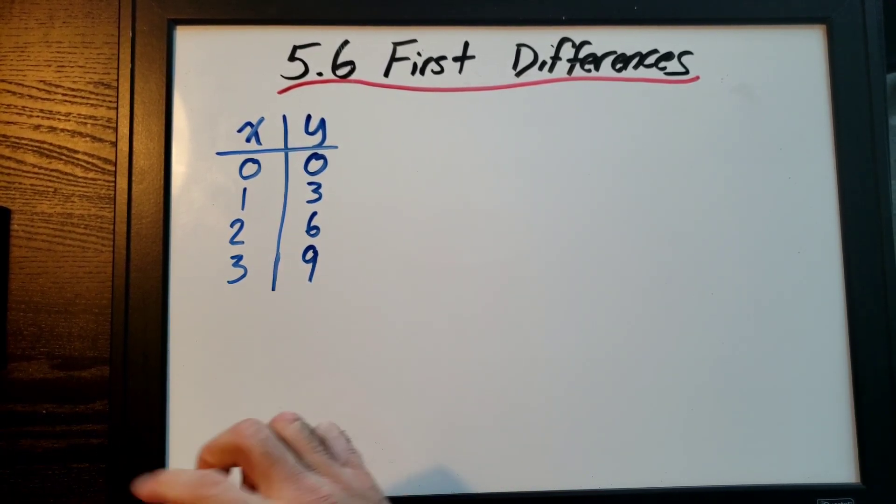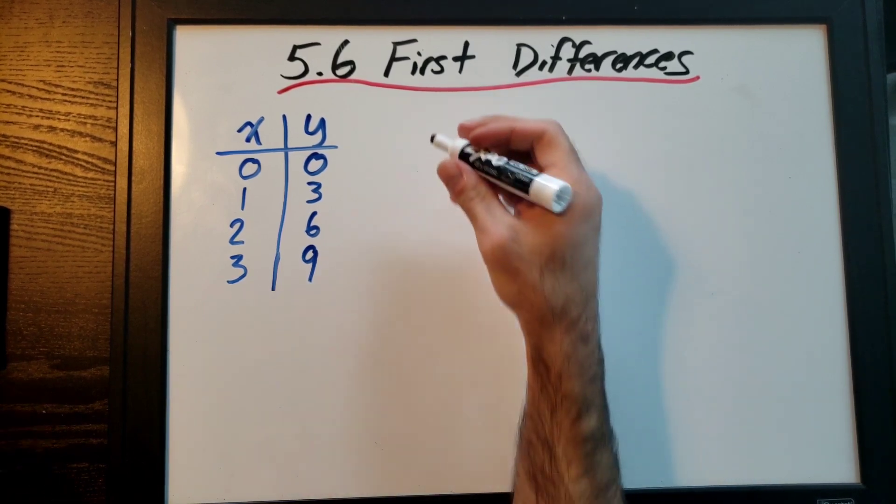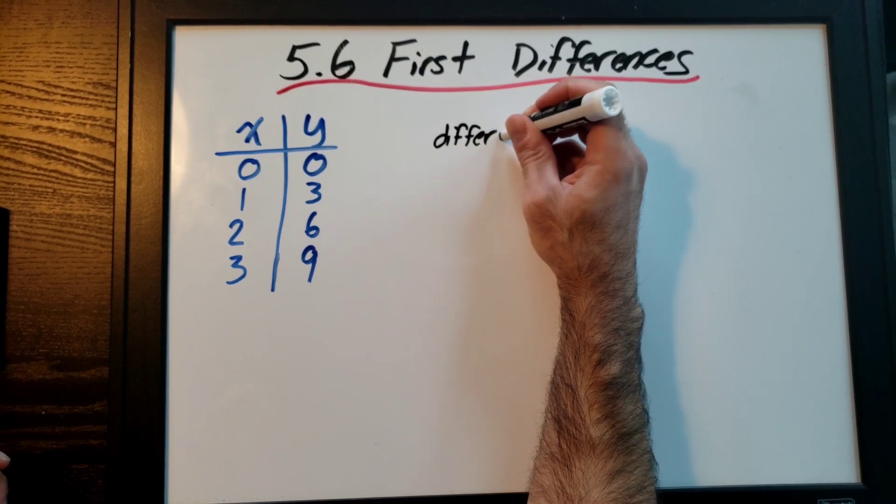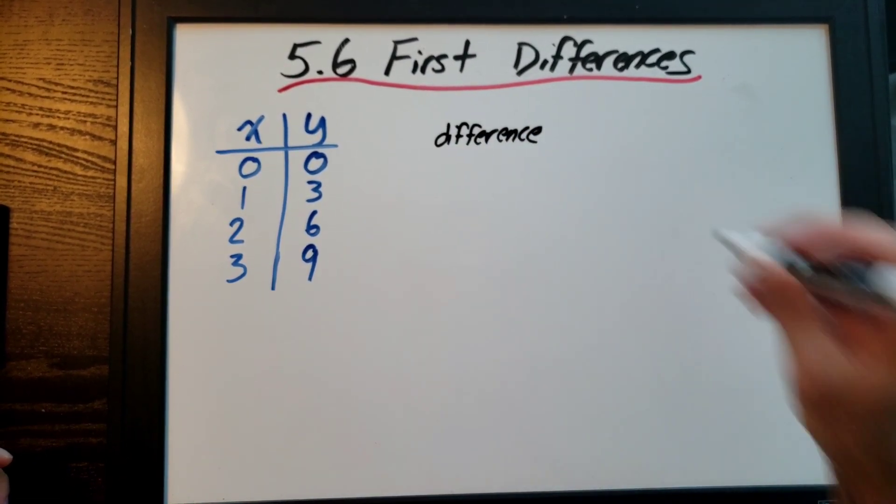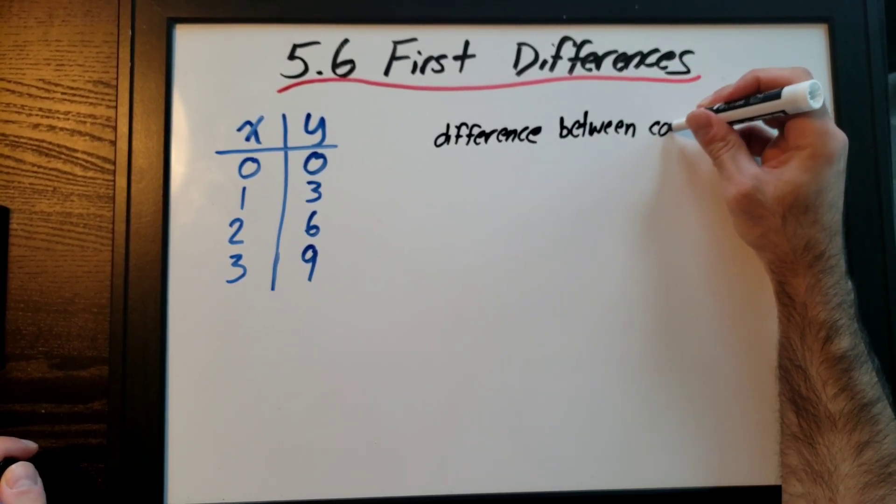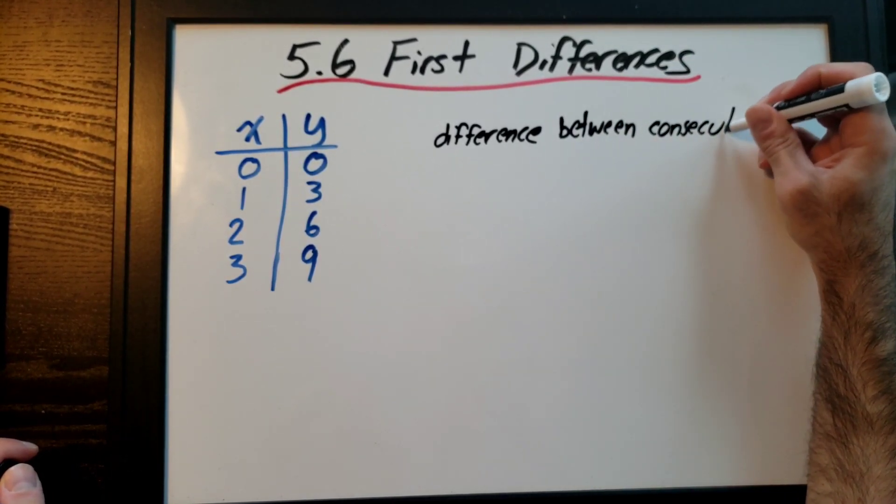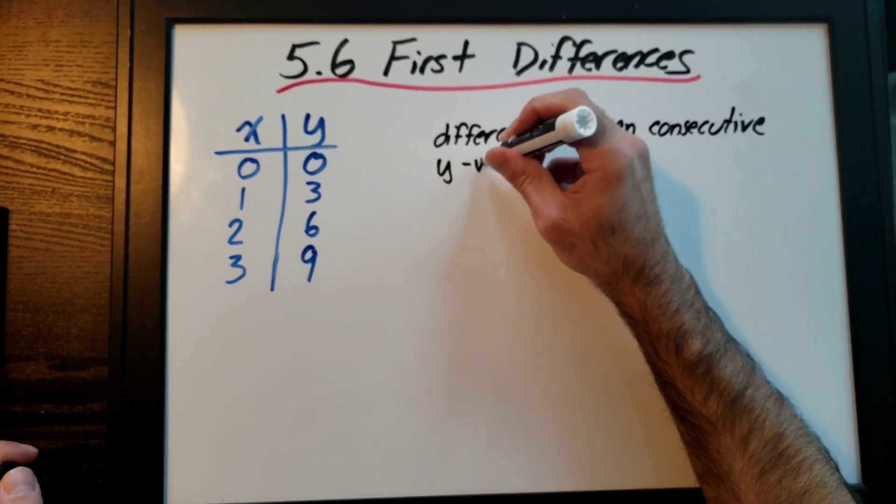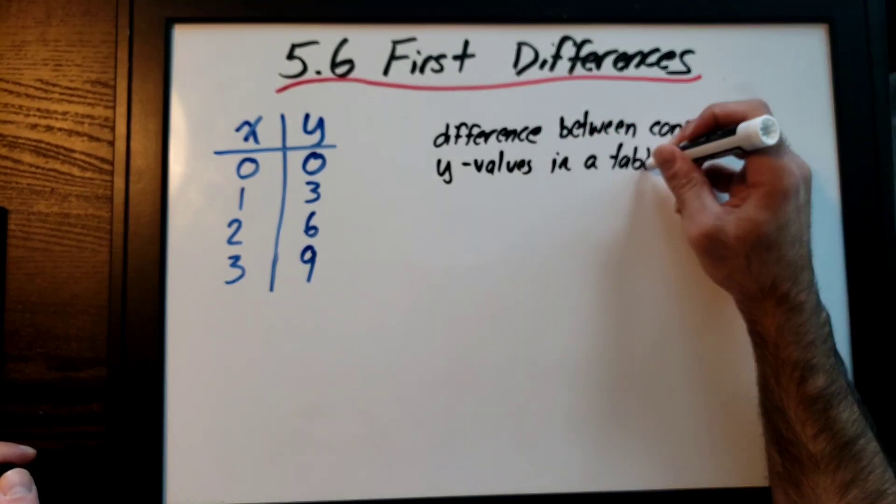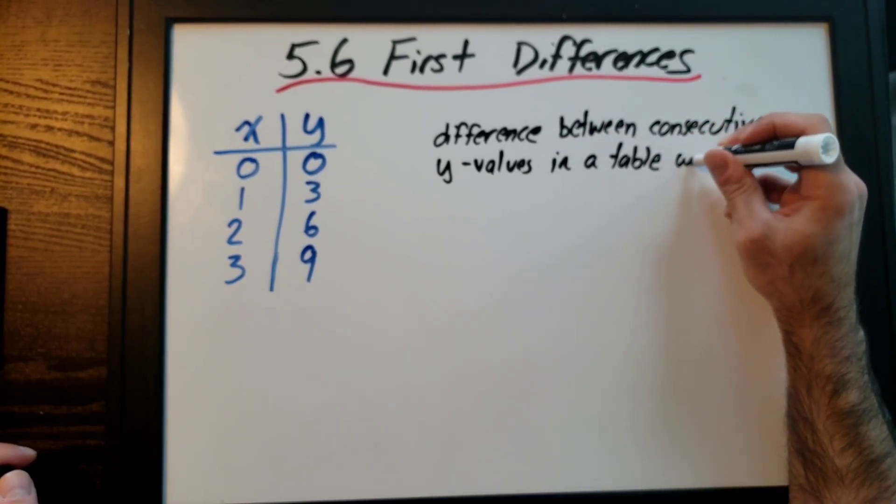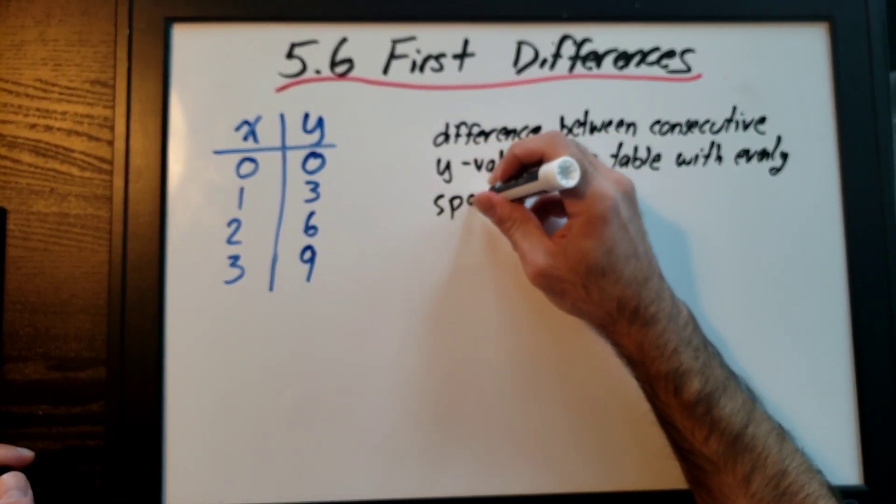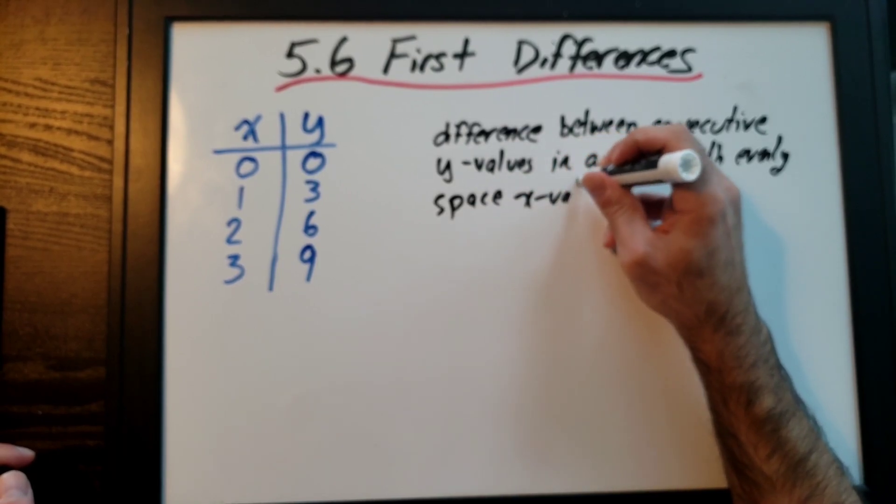My first differences are the differences. I'm actually going to write this down. It's the difference between consecutive Y values in a table with evenly spaced X values.